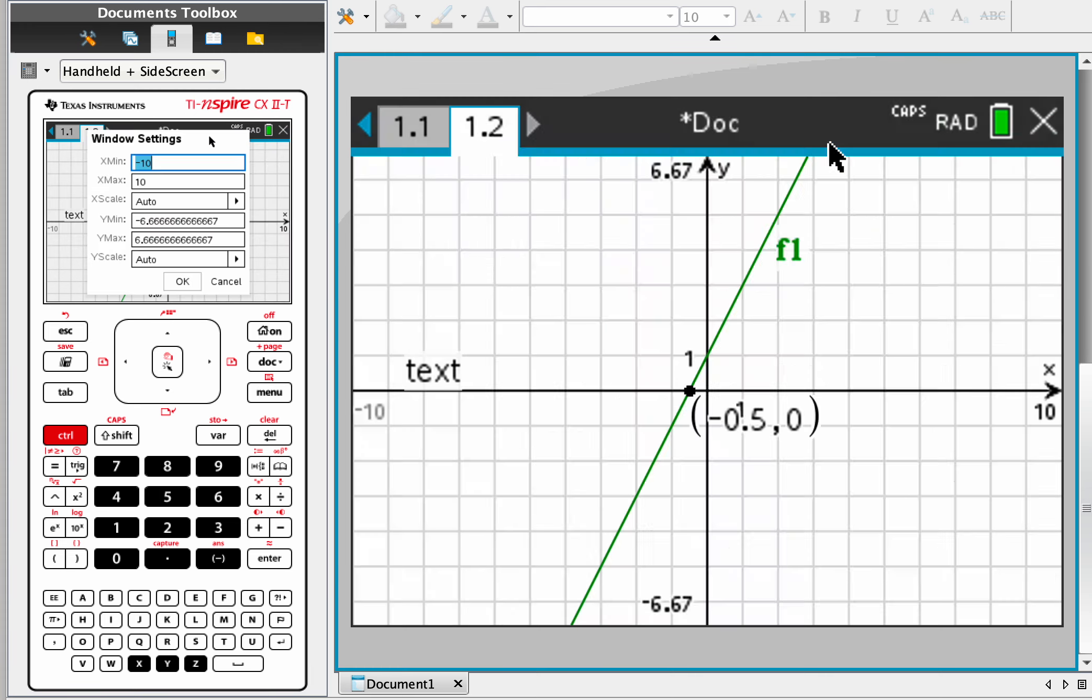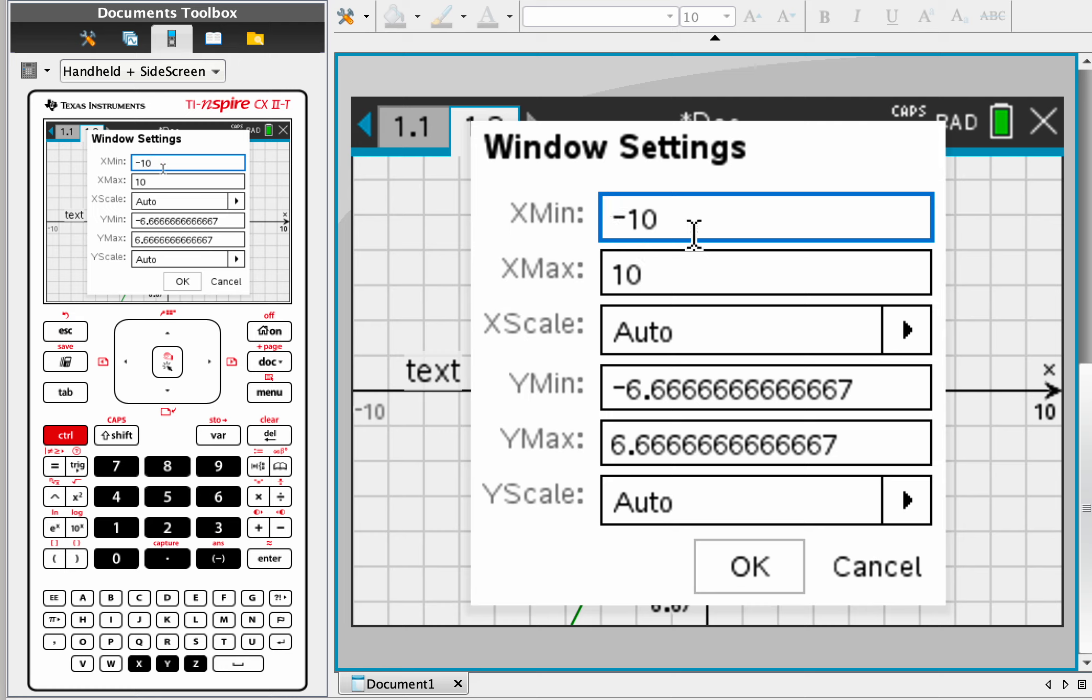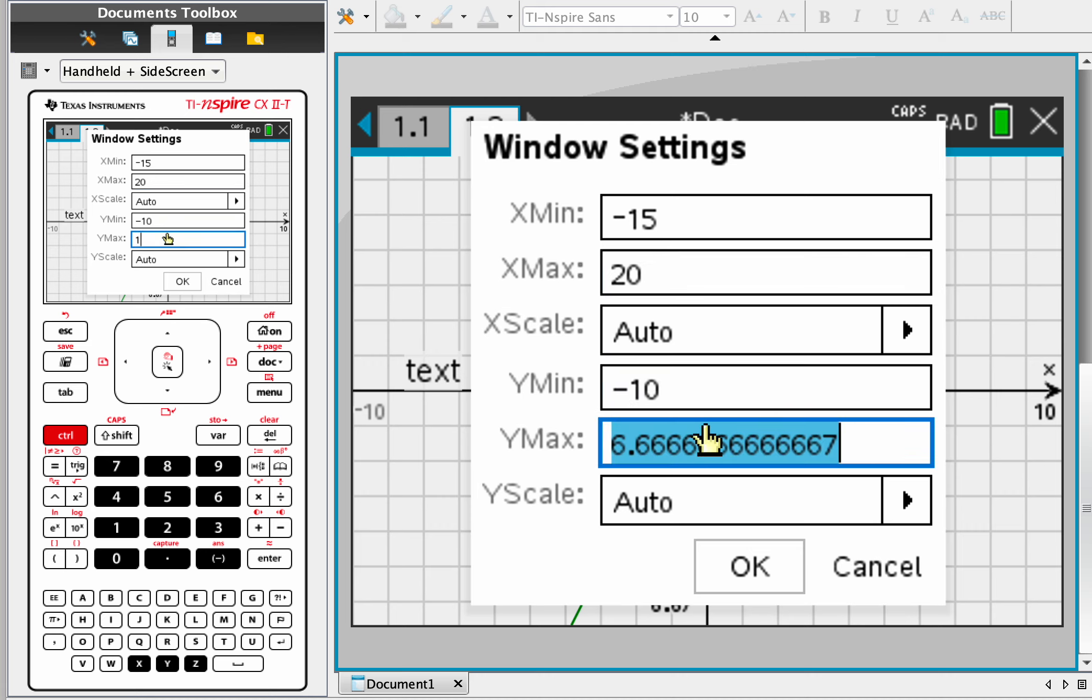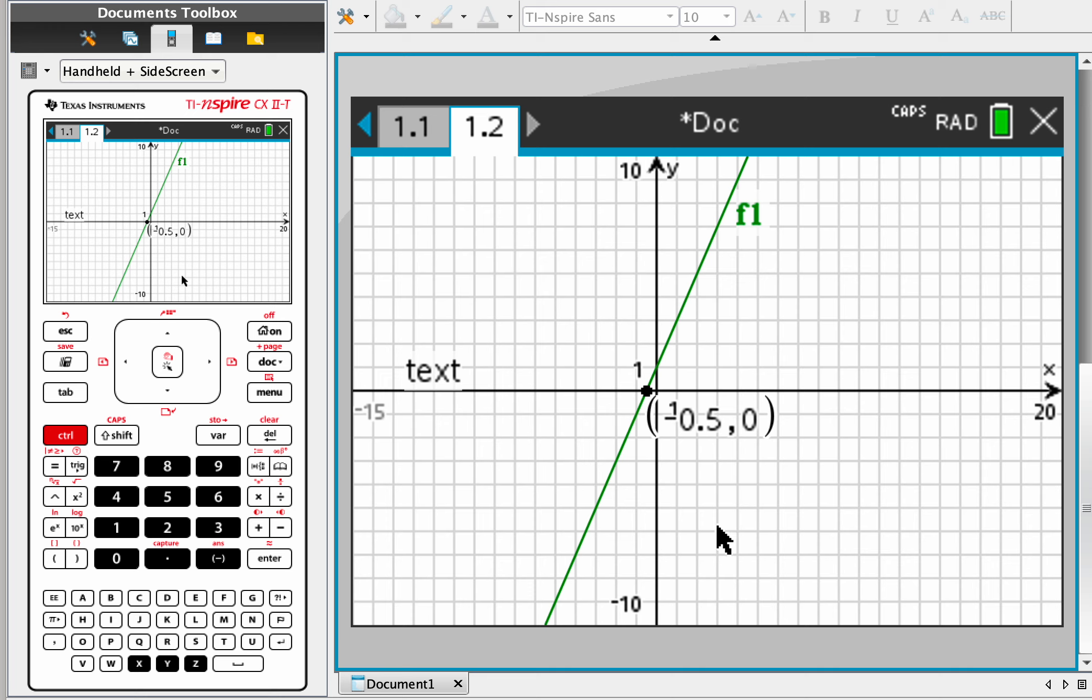So the first one I'll do is window settings. So you can change that to negative 15 on the x. Maybe you want this to go to 20, y, let's go to negative 10, and y max 10. Let's see if that helps us out. Not really, we still don't see it. So that can be a little cumbersome to keep on looking if you're not really sure what to do.